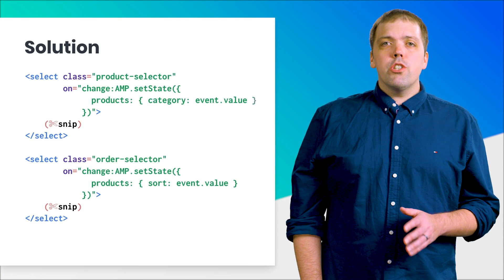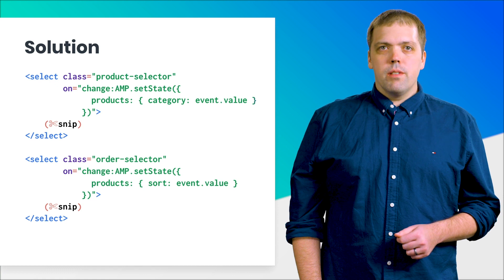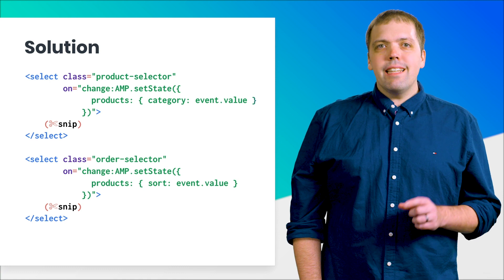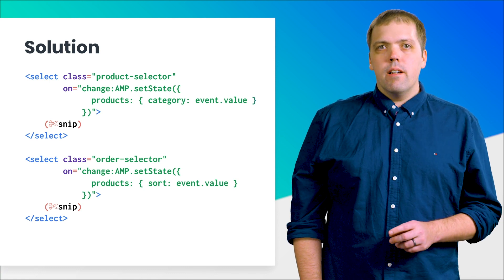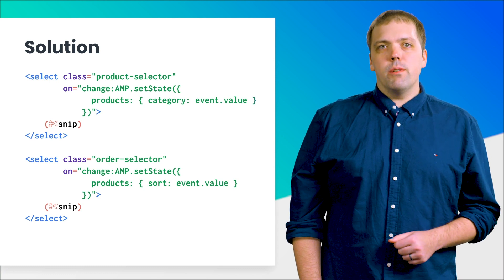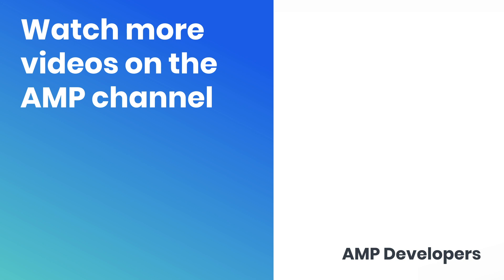All done? Your code should look like the solution on the screen. Here we show how we're updating our state variables. The product type input stores its value into the category state variable in the AMP state component with ID products. The sort by input stores its new selected value into the sort state variable. Here's a demonstration of how to update the amp-list component to render products - see how the endpoint URL is dynamically constructed using state variables.